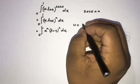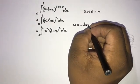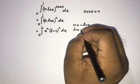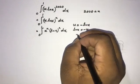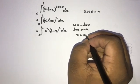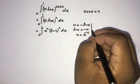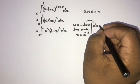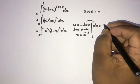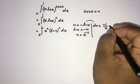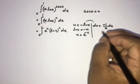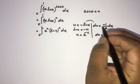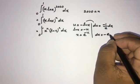Now we can use the substitution method. If we take u equal to negative natural log of x, then natural log of x equals negative u, and x equals e to the negative u. Differentiating, du equals negative 1 over x times dx.